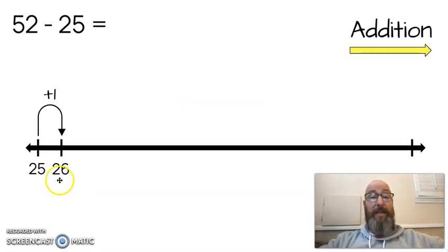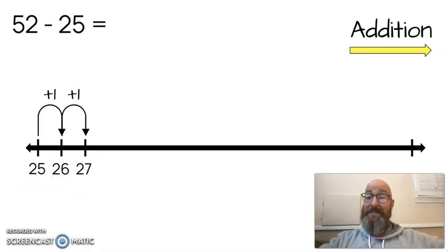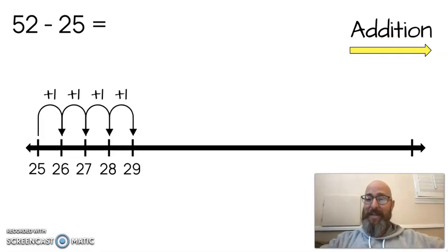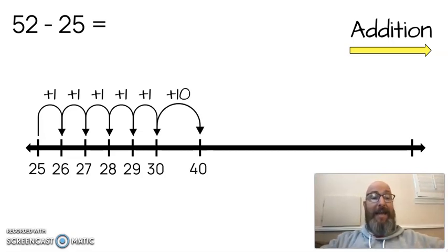25 plus 1 is 26. If I add another one, I get 27. If I add again, 28. Try it again, 29. And if I do one more, I get 30. Now 30 is a ten. Now I can start adding by tens. If I add one 10 to that, I have 40.